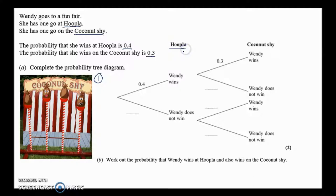So if we're playing hoopla and you have a 0.4 chance of winning hoopla, this section here is the hoopla, then what is your chance of not winning hoopla? Well, it needs to add up to 1. These branches always add up to 1, so what's 1 take away 0.4? That's going to leave us with 0.6. We'll get a mark for that just by doing that.